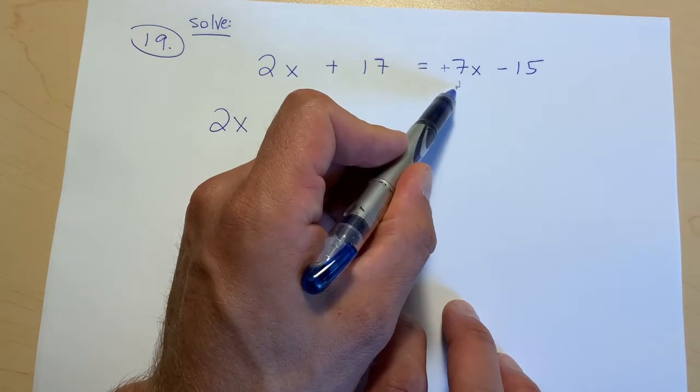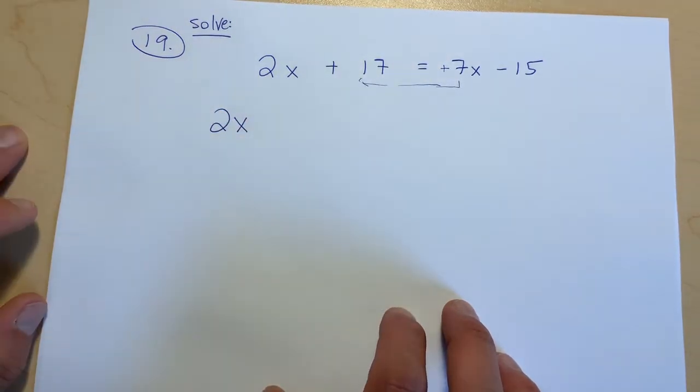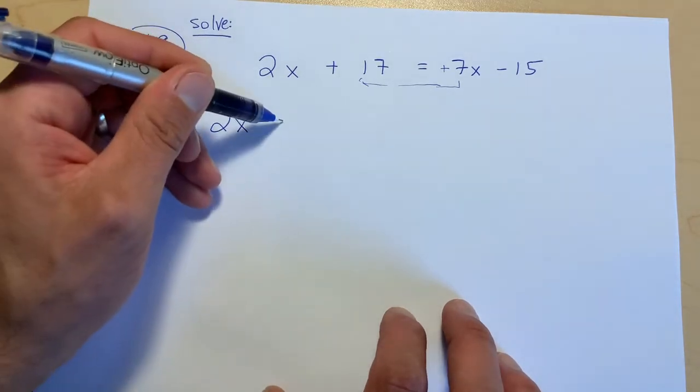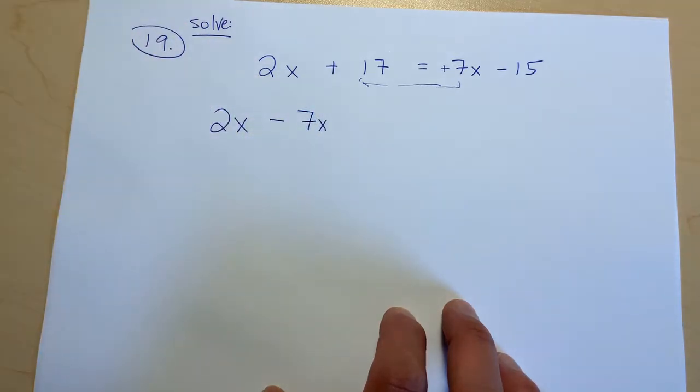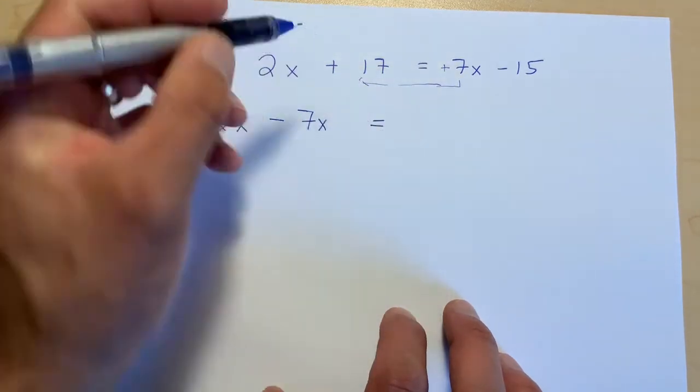And when we bring it over this equal sign, it's going to become negative. So next to this 2x, I'm going to have negative 7x. Wow, okay, equals negative 15.